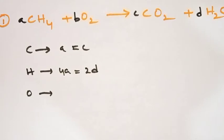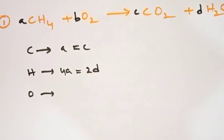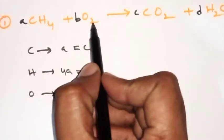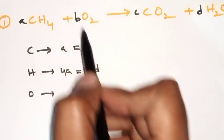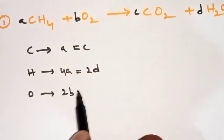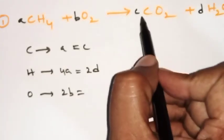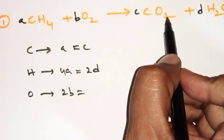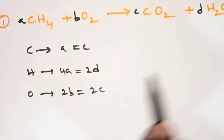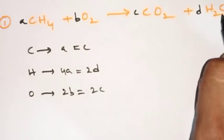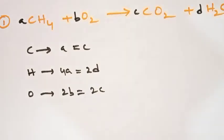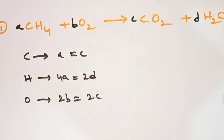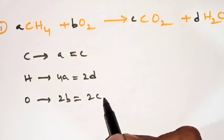Now look at oxygen. On the left side, O₂ has 2 oxygen atoms and the factor is 'b', so left side oxygen = 2b. On the right side, CO₂ has 2 oxygen atoms giving 2c, and H₂O has 1 oxygen atom giving d. Therefore our third equation is: 2b = 2c + d.